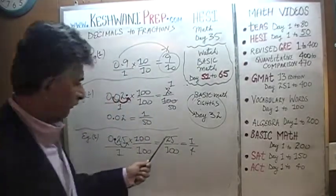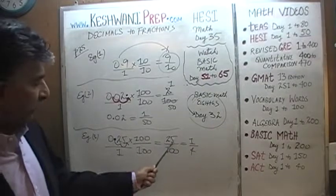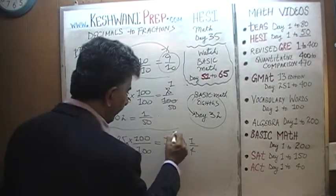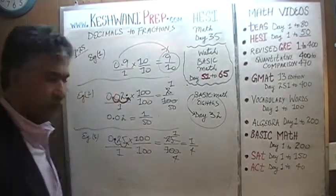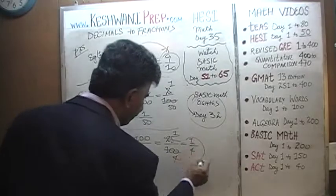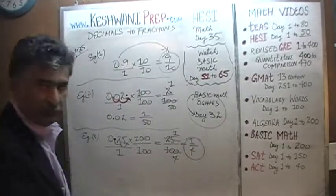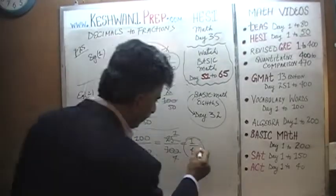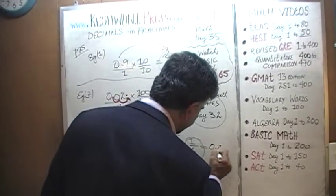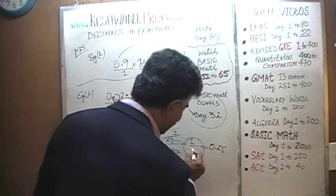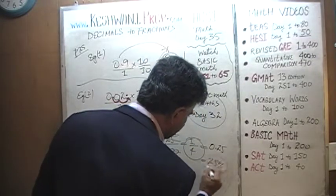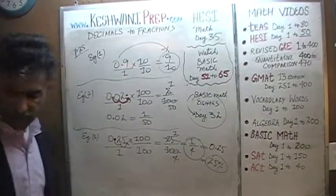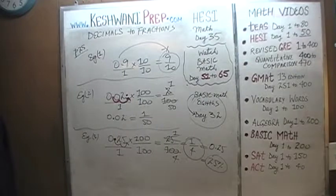Twenty-five over a hundred is one-fourth. If we divide top and bottom by twenty-five: twenty-five divided by twenty-five is one, and a hundred divided by twenty-five is four. Which, again, was a very silly thing, because of course everybody knows that a quarter is 0.25 — a quarter of something is 0.25, or twenty-five percent. No big news.